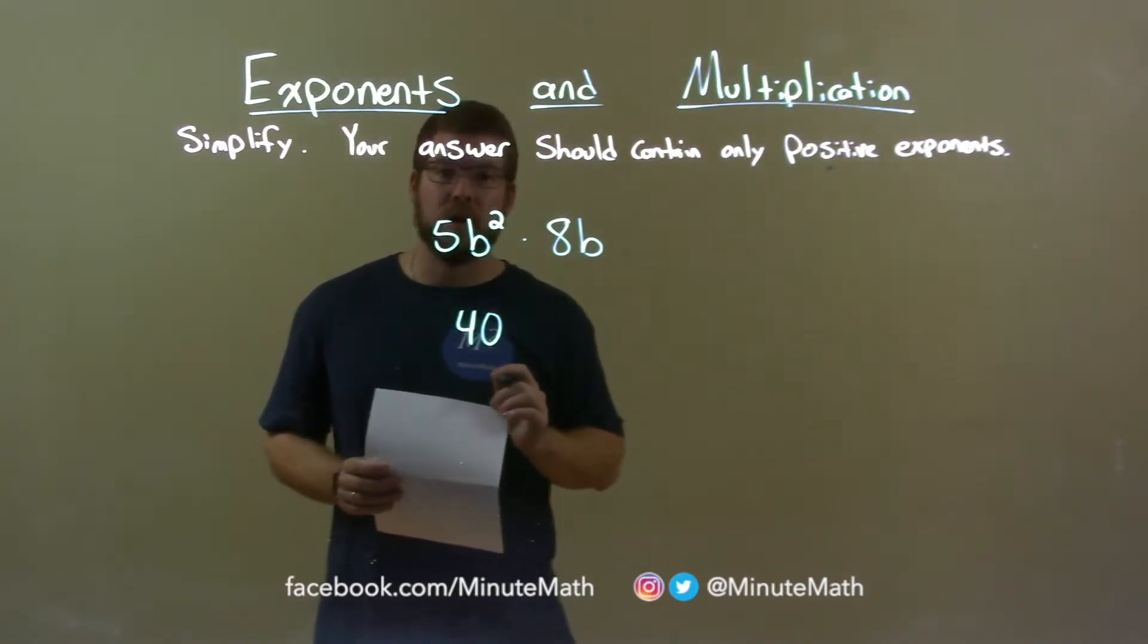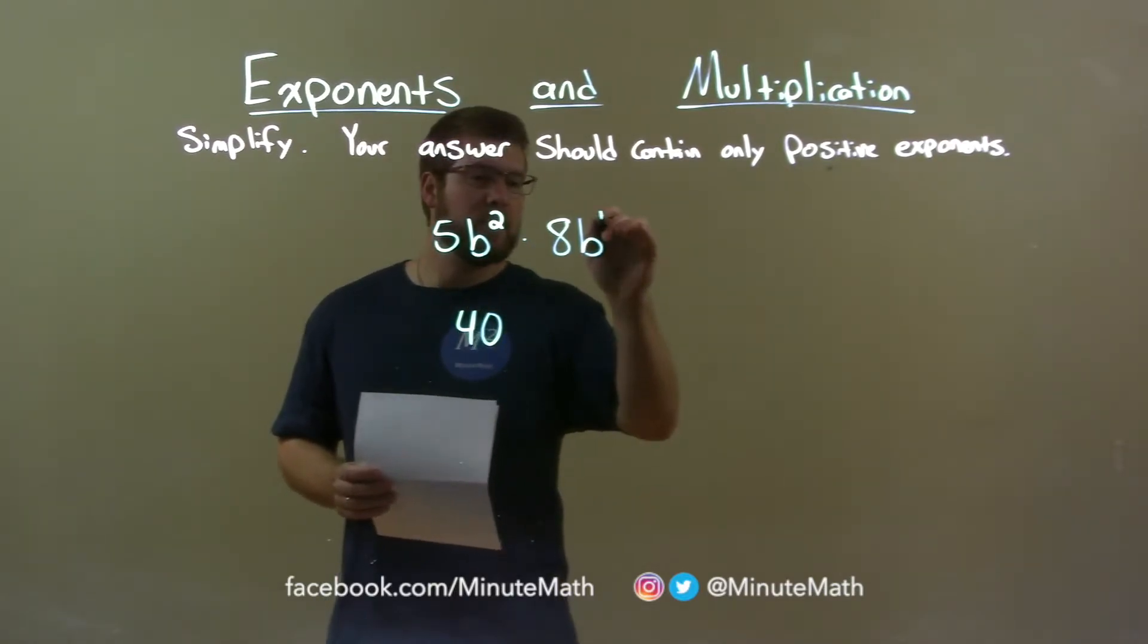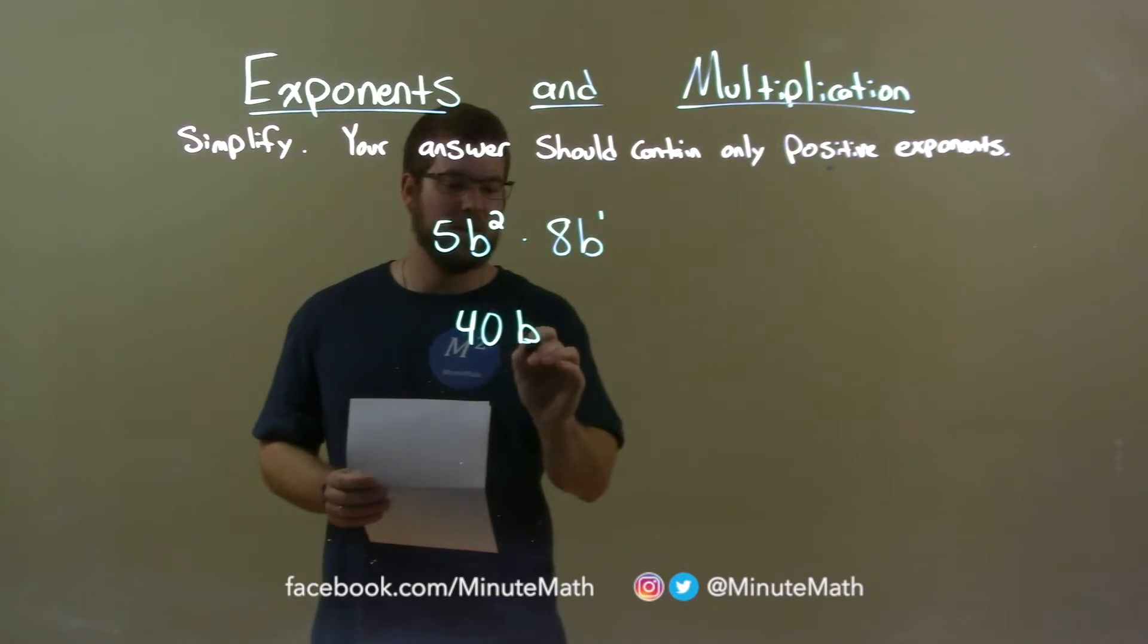Now, let's look at the variables, b squared and b. Well, b is really to the first power right there, and we multiply variables that are the same. That base stays the same, which coincidentally is a b.